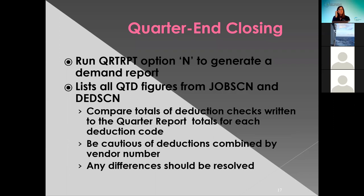For the quarter end closing, you can go ahead and run the quarter report. You want to do the option of end first to generate a demand report. This will list all your quarter-to-date figures from the job screen and deduction screen — that's where those get pulled from. You want to compare the totals of the deduction checks written to the quarter report totals for each deduction code. Be cautious of any deductions that might have been combined by vendor number. If there is any difference, you want to go ahead and resolve that before closing.